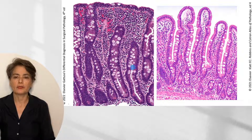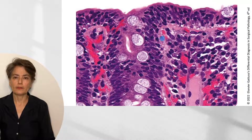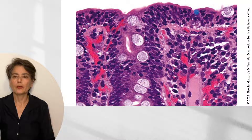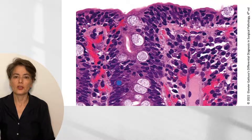On higher magnification looking at the surface, you can see small dark nuclei — these are T lymphocytes in the epithelium, and there are lots of them. Contrast that with the more cigar-shaped and lighter nuclei of the epithelial cells themselves.